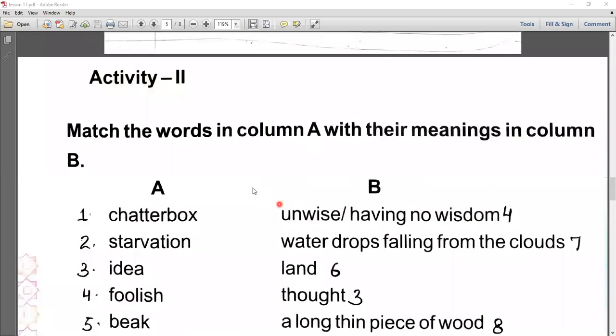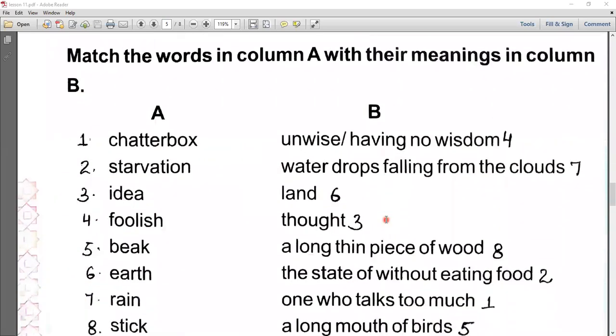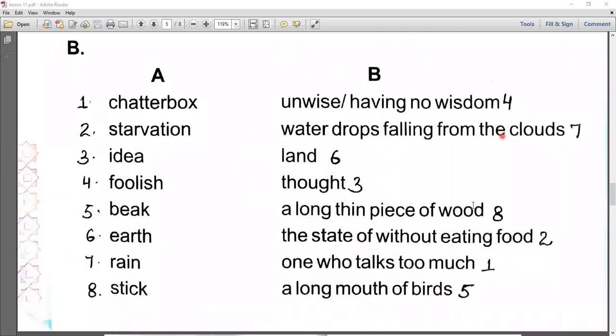Activity number seven: match the words in column A with their meanings in column B. Number one, chatterbox, which means one who talks too much. Number second, starvation, which means the state of being without eating food. Number third, idea, yes, which means thought. Number fourth, foolish, which means unwise or having no wisdom.